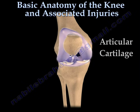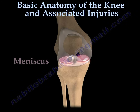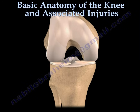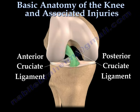Inside the knee you will find the smooth articular cartilage that covers the joint surface. Resting on top of the tibial cartilage you will find the meniscus, which improves stability of the joint and helps distribute weight. The anterior cruciate and the posterior cruciate ligaments are important ligaments that control the forward and backward motions of the knee joint.